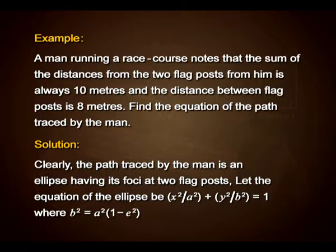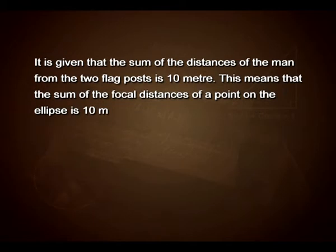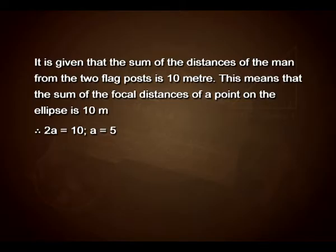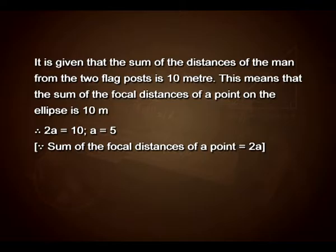Let the equation of the ellipse be x² upon a² plus y² upon b² equals 1, where b² equals a² into 1 minus e². It is given that the sum of the distances of the man from the two flag posts is 10 meters. This means the sum of the focal distances of a point on the ellipse is 10 meters. Therefore, 2a equals 10 and a equals 5, since the sum of the focal distances equals 2a.